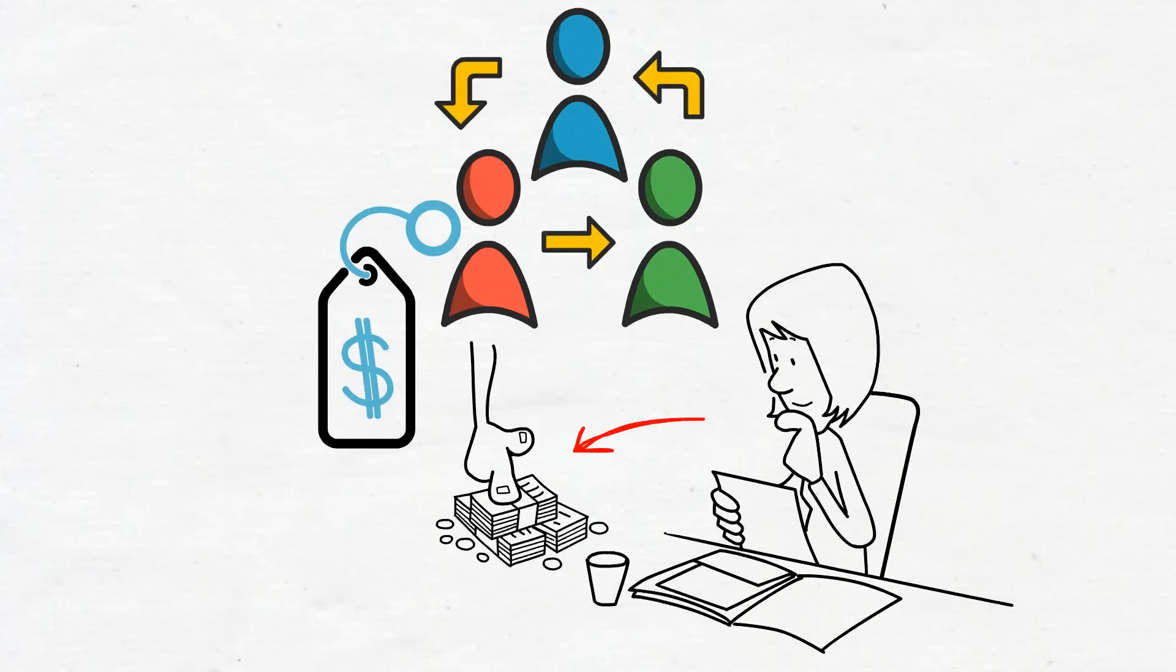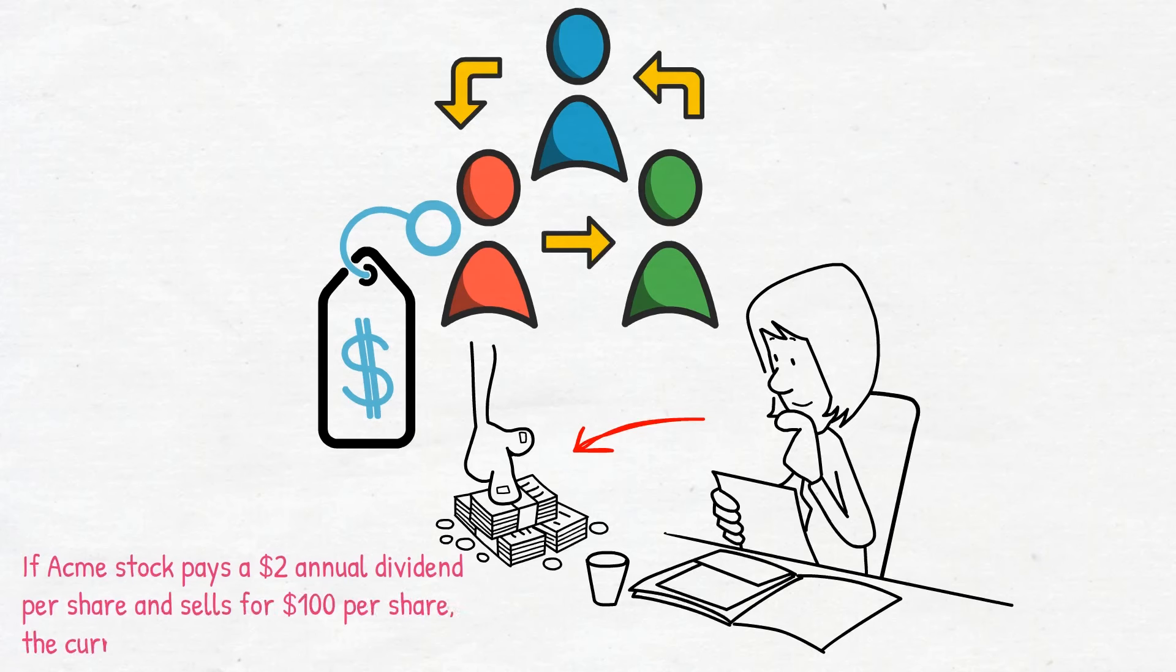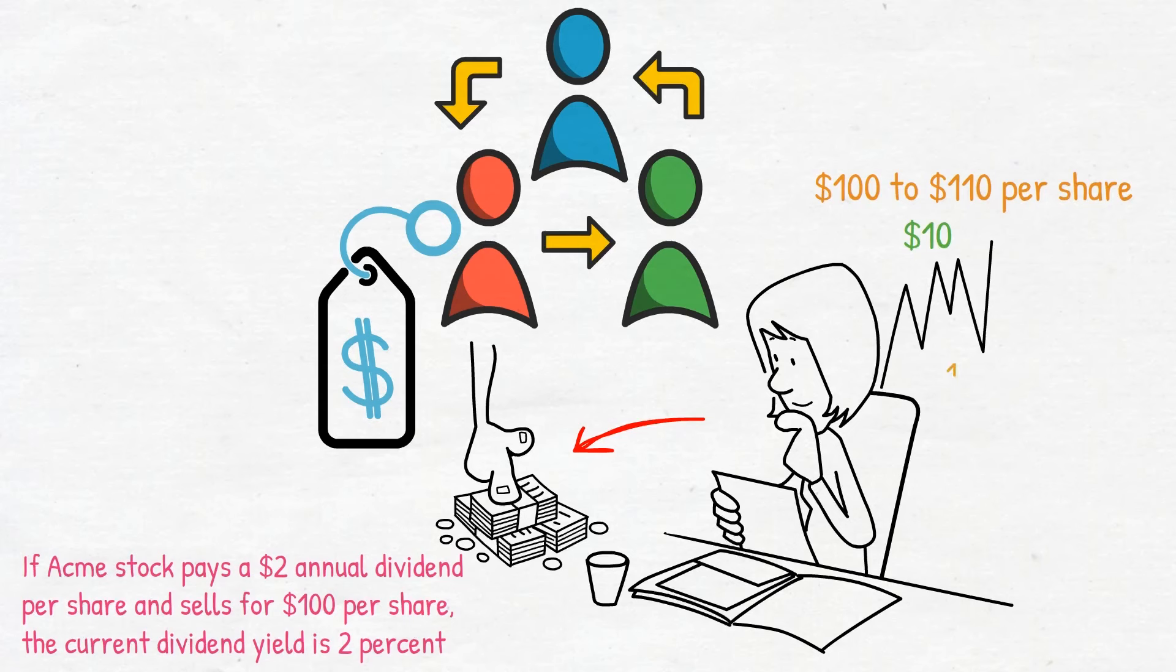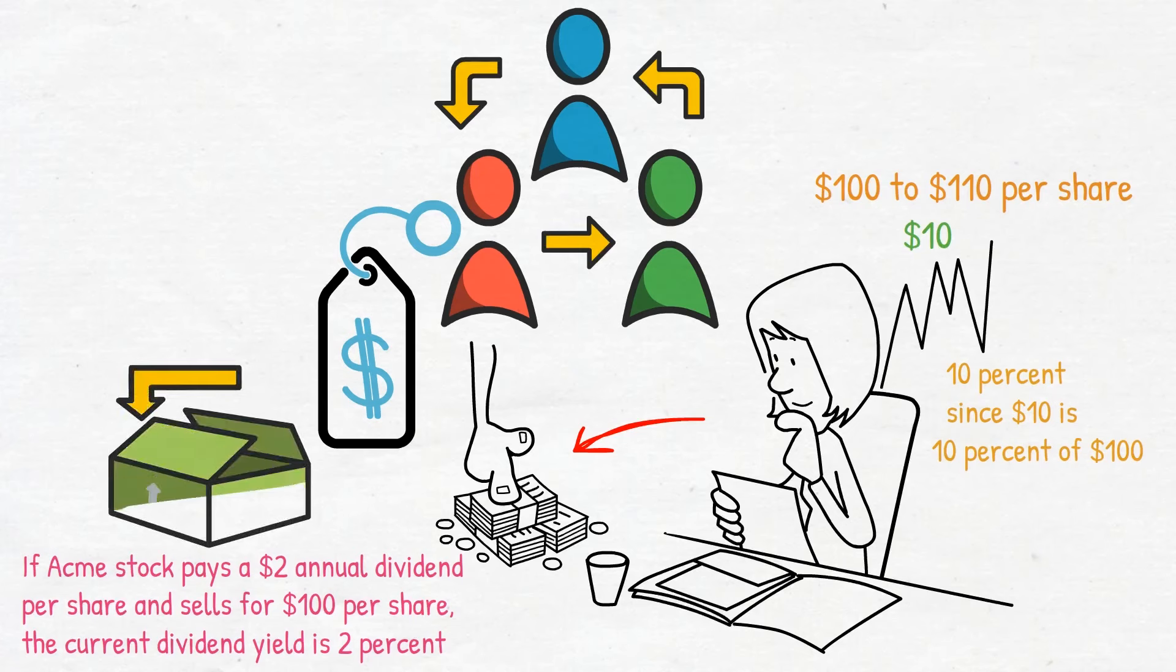For example, if Acme stock pays a $2 annual dividend per share and sells for $100 per share, the current dividend yield is 2 percent. Also, if the stock's price during the year increases from $100 to $110 per share, the gain is $10, or the stock has appreciated by 10 percent. If both of these developments occur, the total return on the Acme stock would be 12 percent: 2 percent dividend yield plus 10 percent capital gains yield.